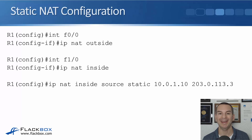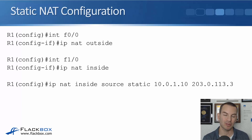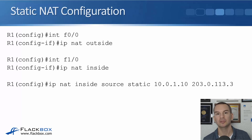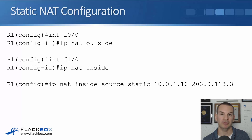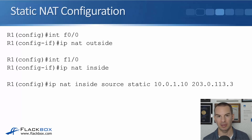Whenever host 10.0.1.10 sends traffic coming in on interface Fast1/0 going out to the outside via Fast0/0, the router will change its source IP address on that outbound traffic from 10.0.1.10 to 203.0.113.3. For the incoming traffic, whenever traffic comes in with 203.0.113.3 as the destination address on interface Fast0/0, the router will change that destination address to 10.0.1.10 and send it through to interface Fast1/0. So this takes care of NAT translation for traffic in both directions.